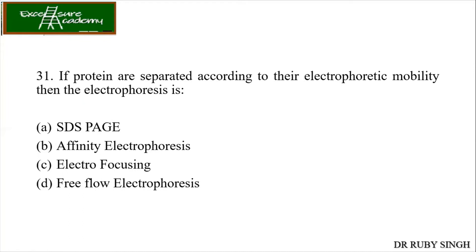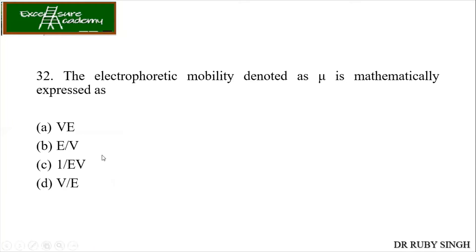If proteins are separated according to electrophoretic mobility, then the electrophoresis is — since the entire MCQ series is on SDS-PAGE, the answer is SDS-PAGE. Regarding the electrophoretic mobility formula, denoted as mu, it is mathematically expressed as already taught in the lecture. The answer is option D — that is, velocity divided by electric potential, mu equals V/y.